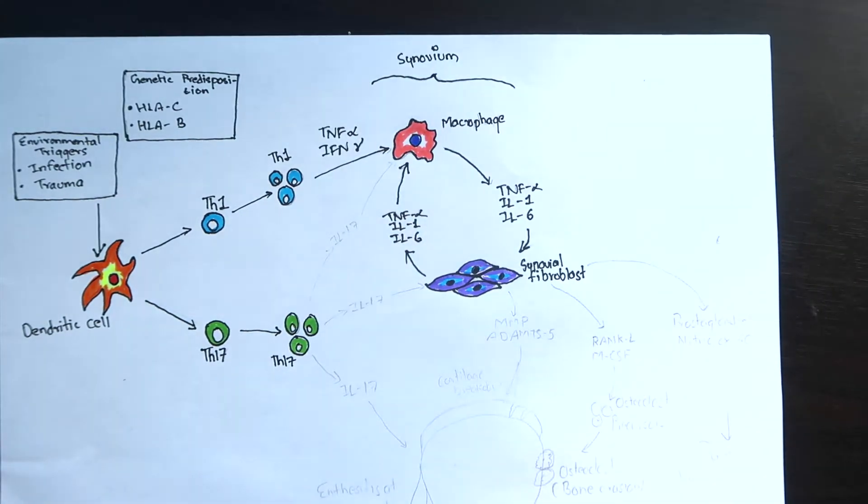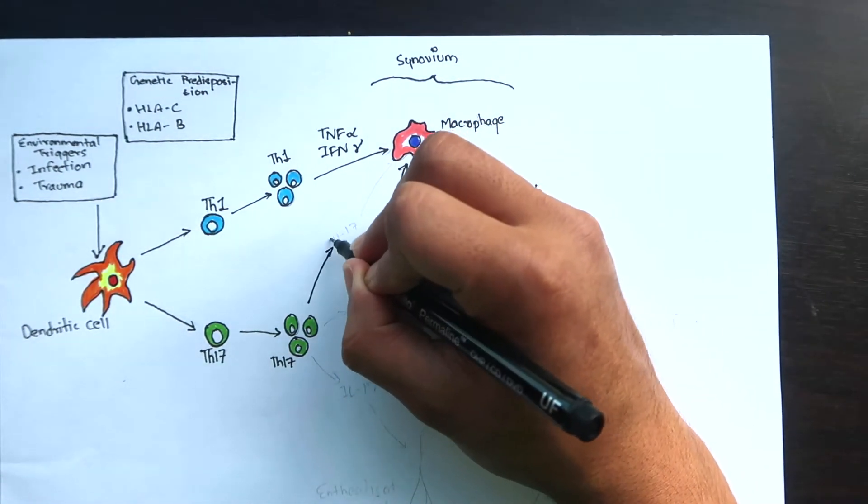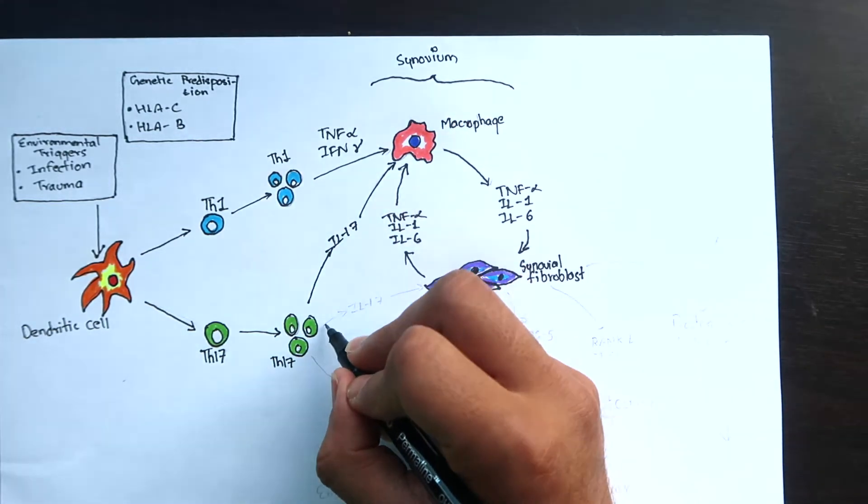The T helper 17 cells can produce interleukin-17 that can activate both macrophages and synovial fibroblasts directly.